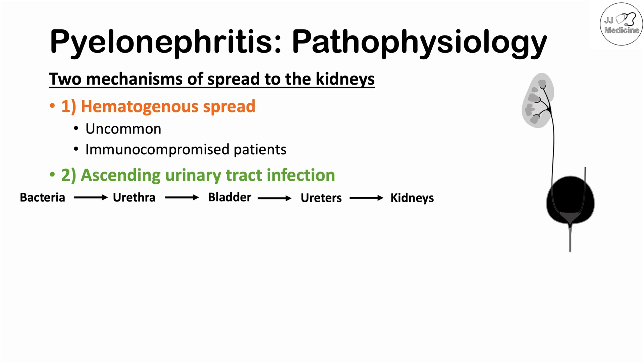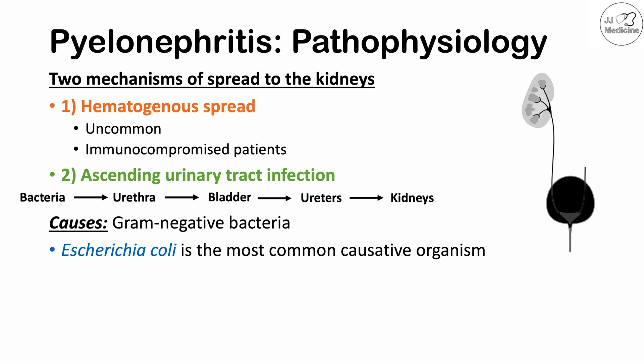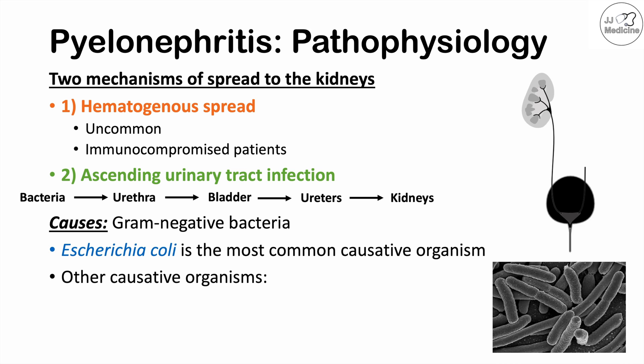What is the exact cause of acute pyelonephritis in most cases? It is a bacterial infection, and the causes are generally gram-negative bacteria. The most common causative organism is E. coli, a gram-negative rod. Other common causative organisms include Proteus, Klebsiella, and Enterobacter. A useful mnemonic to remember these four bacteria is KEEP: K for Klebsiella, E for E. coli, E for Enterobacter, and P for Proteus.